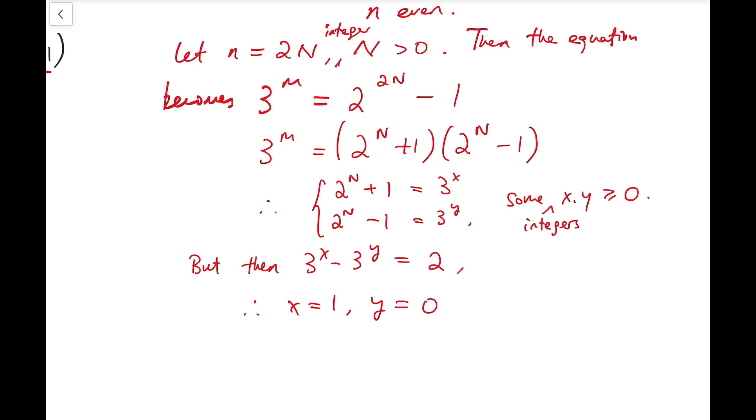therefore x equals 1 and y equals 0 so that we can have the power of 3 to be 3 minus 1 that equals 2 because as the integral power of 3 goes higher then the difference will get way larger than 2 so that's not possible at all.